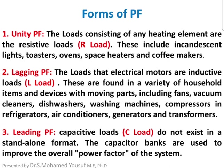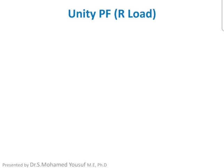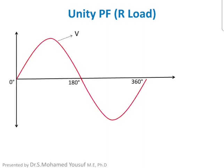Now let us look at the waveform of unity power factor. The red line shows the voltage waveform for the resistive load, and the green line shows the current waveform. Here both voltage and current waveforms start at the same point and end at the same point — there is no angle difference between the voltage and current.